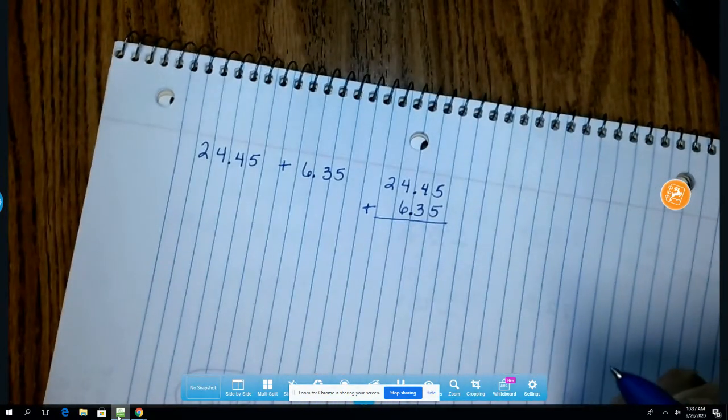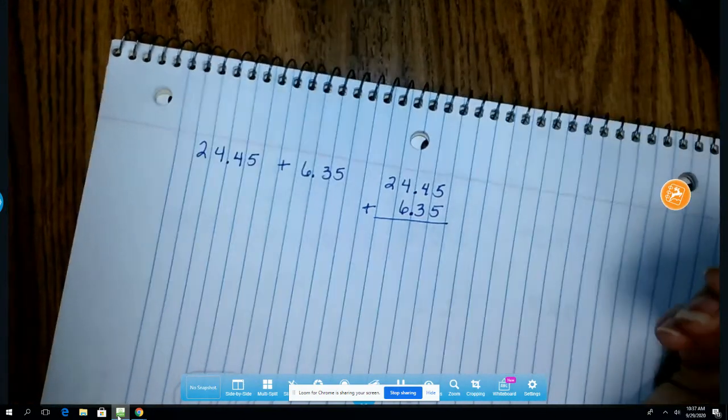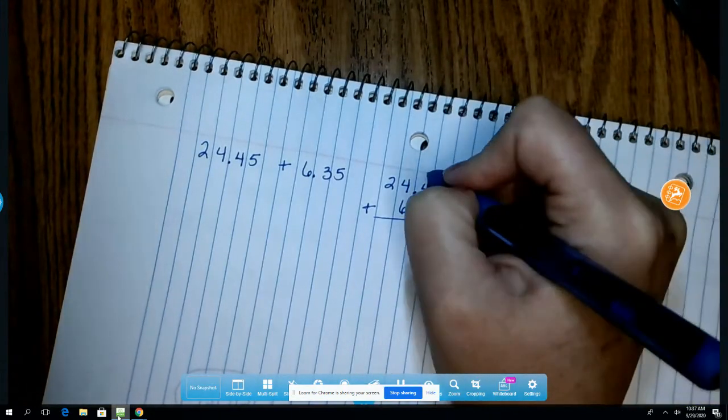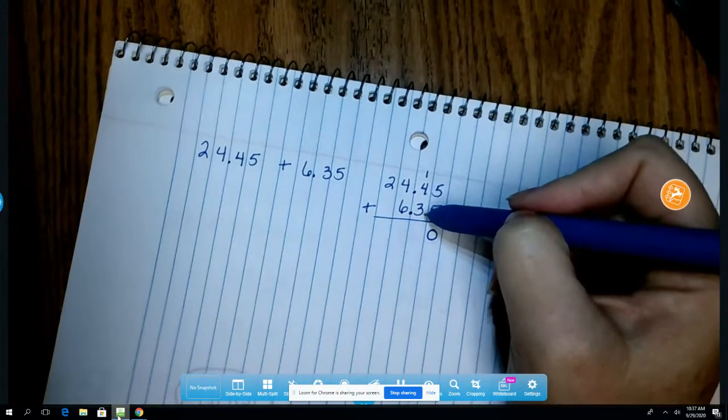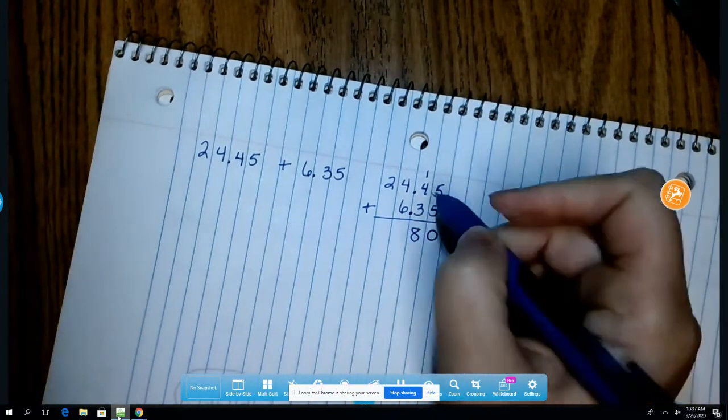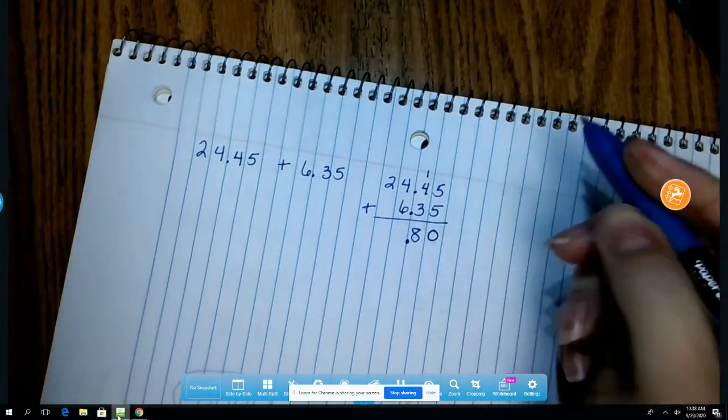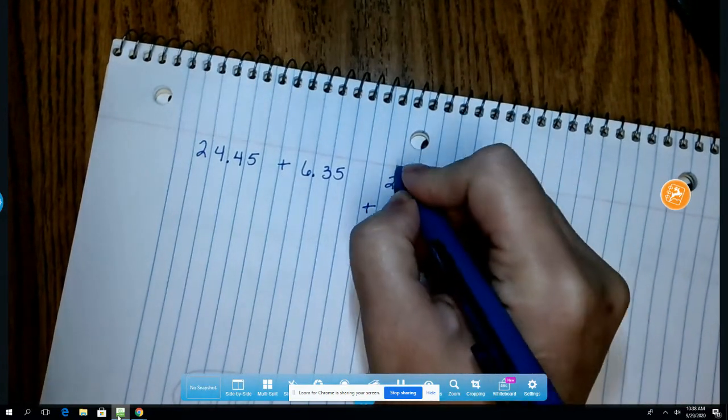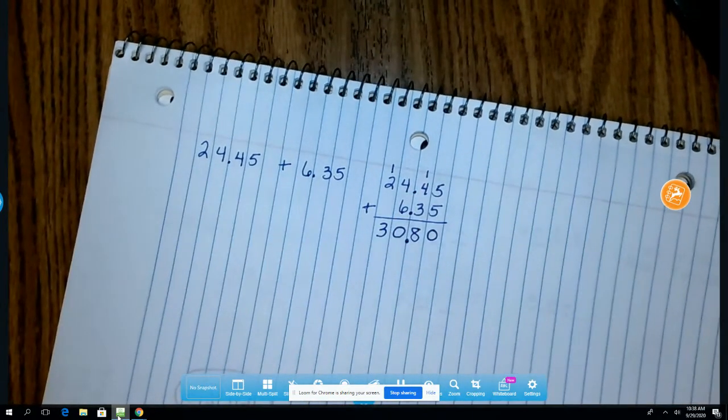So now I'm just going to add like I normally do. 5 plus 5 is 10. I cannot have 10 here so I'm going to have to put the zero and add 1 into the tenths place. So 1 plus 4 is 5. 5 plus 3 is 8. My decimal just goes right down in a line. 4 plus 6 is 10. 1 plus 2 is 3.